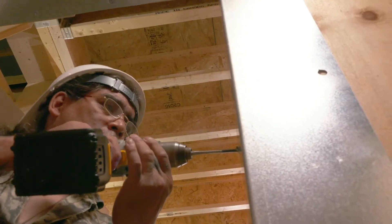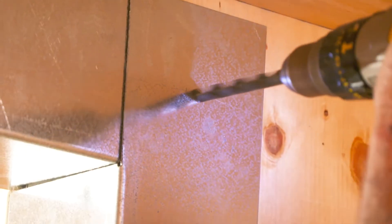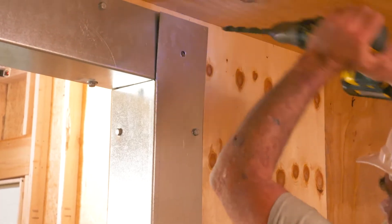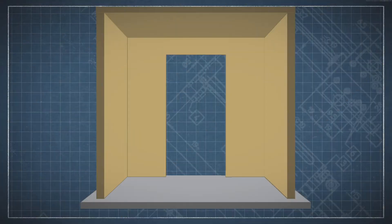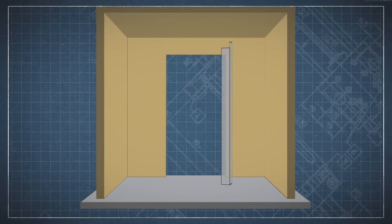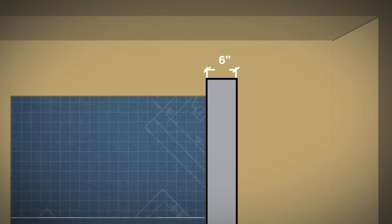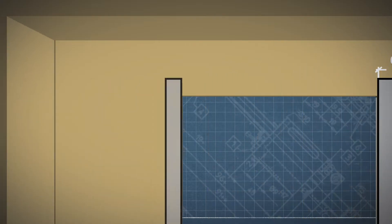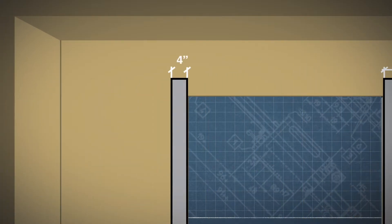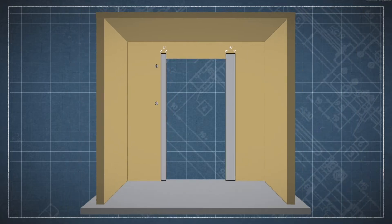Note that the lag bolt holes are field drilled where the jam angles overlap the header angle. Note also that the angle on the right side of the entrance, when standing inside the safe room, is 6 inches wide, while the angle on the left side is 4 inches wide. This is specified so that the left angle does not overlap with the bolt hooks used to hang the door.